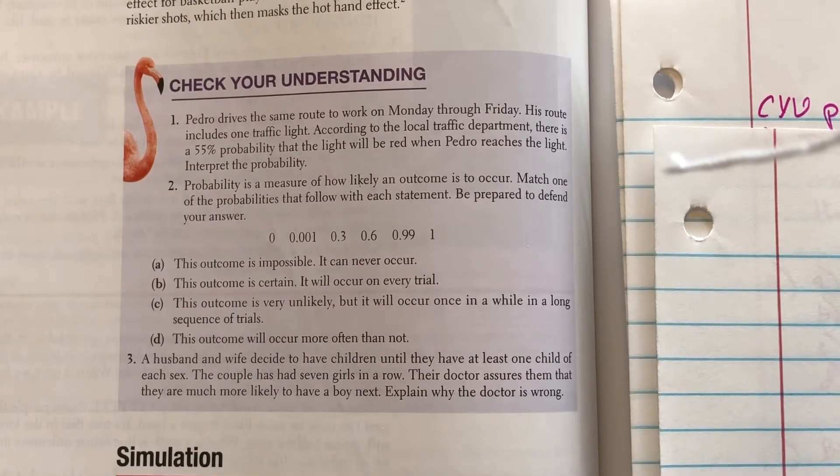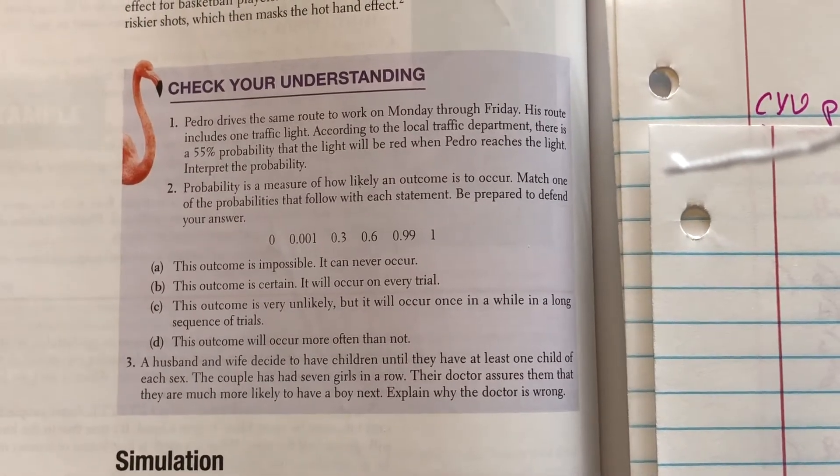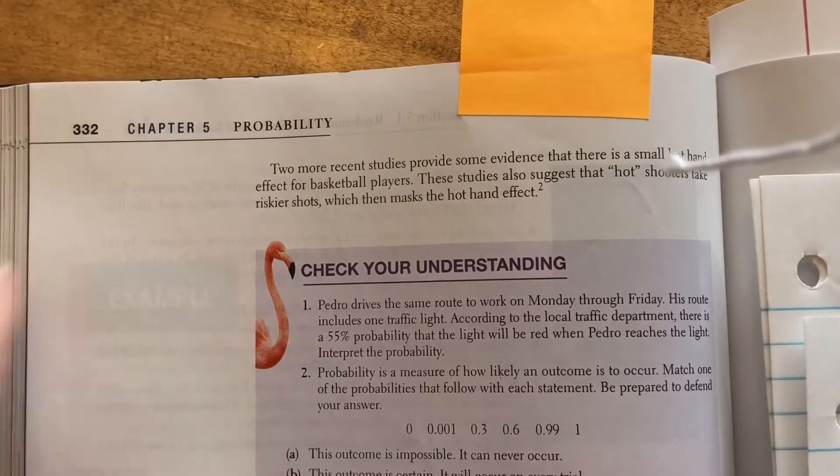Hi guys, it's Mrs. Millicent. Okay, we're going to do the check your understandings for chapter 5, probability. First one's on page 332.